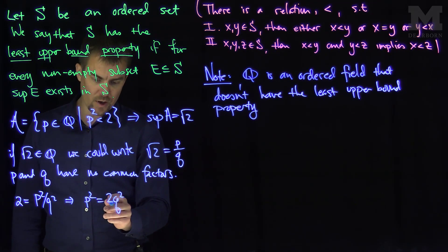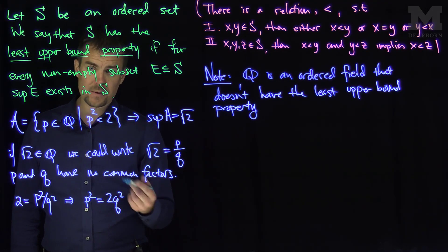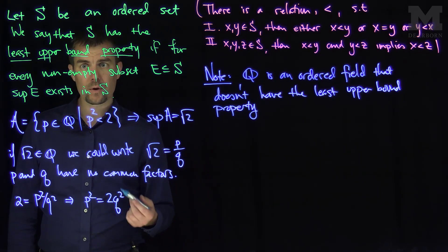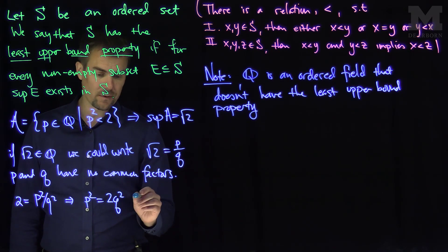And then if I square this relationship, I have two is equal to p squared over q squared, which tells us that p squared is two q squared. Now if p squared is two times something, that means that p has to be even.